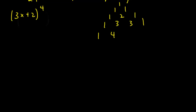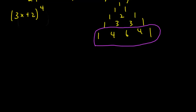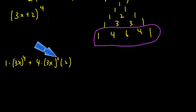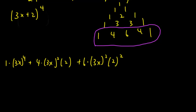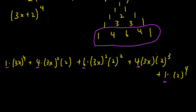That row — one, four, six, four, one — is the one I'm looking for. These are my coefficients. So let's do the expansion: one times (3x) to the fourth, plus four times (3x)³ times 2, plus six times (3x)² times 2², plus four times 3x times 2³, and then plus one times 2 to the fourth.